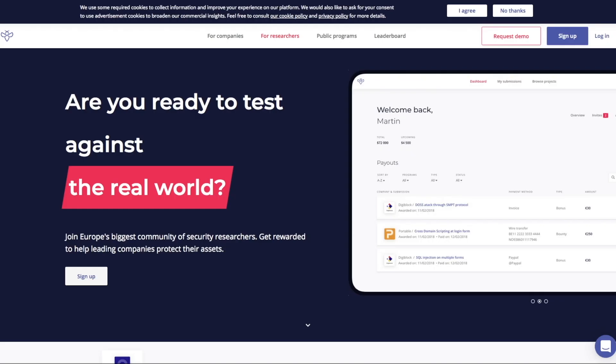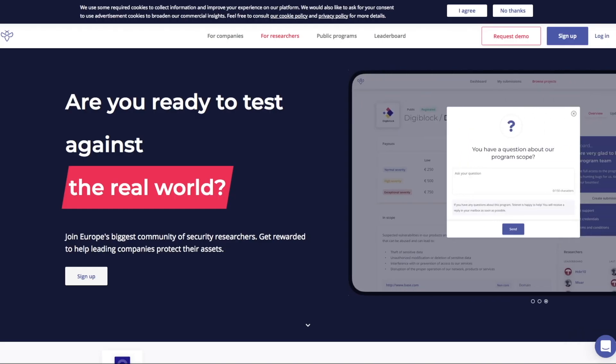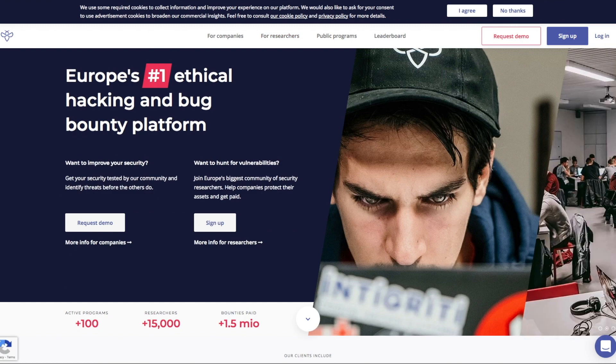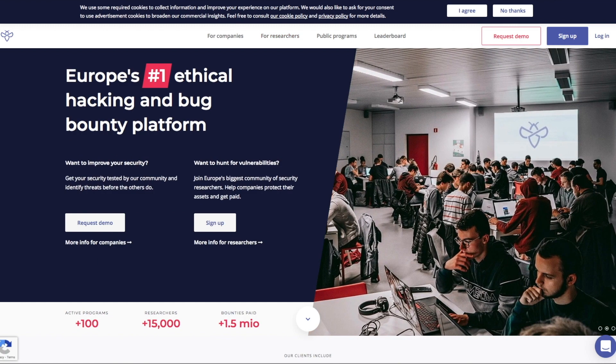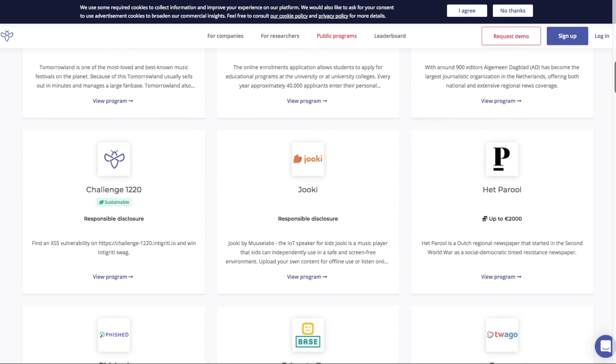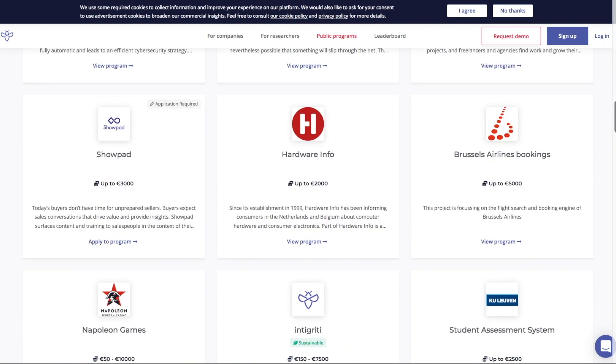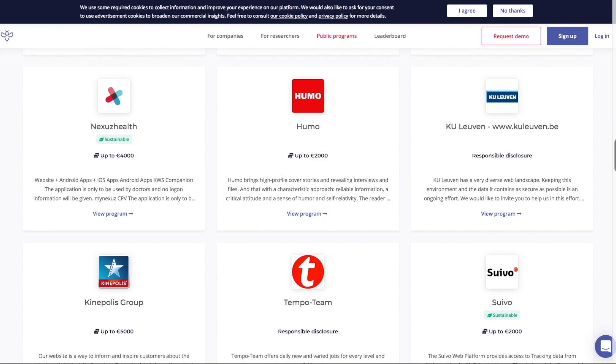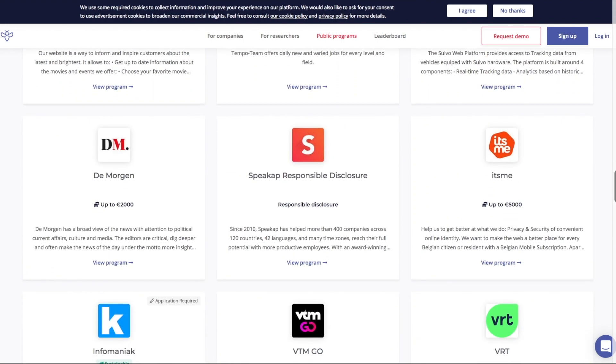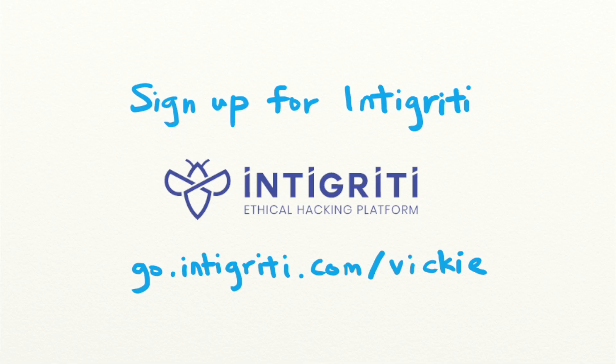Want to get rewarded for finding security bugs like this one? Intigriti is a bug bounty platform that pays you for reporting security vulnerabilities. With more than 100 public and private targets to test your skills on, you can test your hacking skills on real targets legally and get rewarded for it. Sign up now with the link in the description.